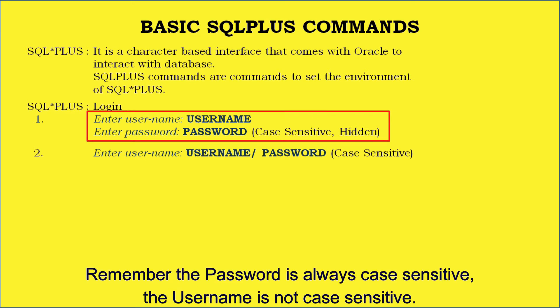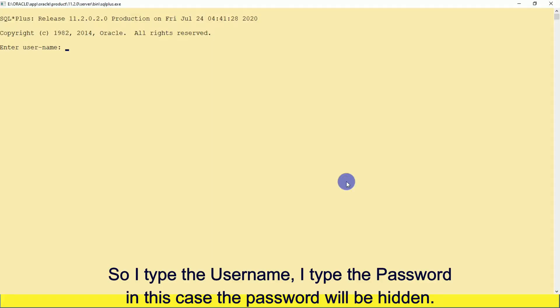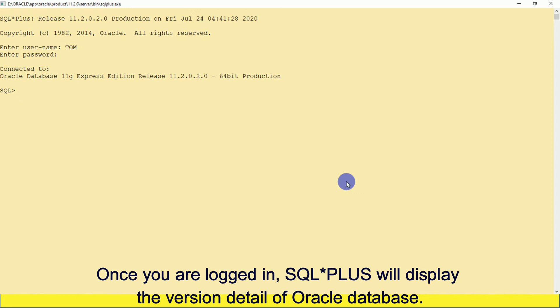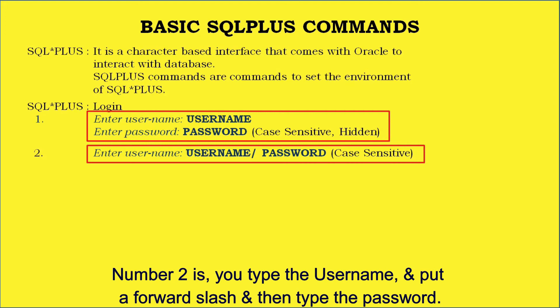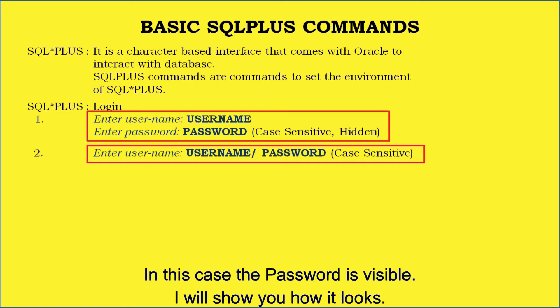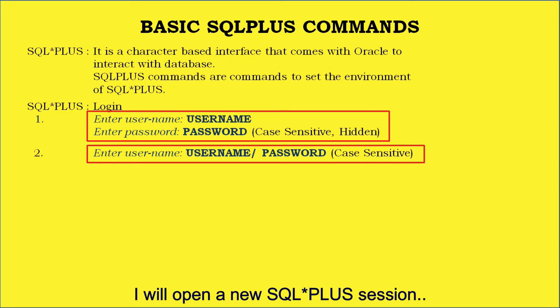Remember, the password is always case-sensitive but the username is not case-sensitive. So I type the username and then the password — in this case the password will be hidden. Once you are logged in, SQL*Plus will display the version details of Oracle database. Method two: type the username, put a forward slash, and then type the password. In this case the password is visible.